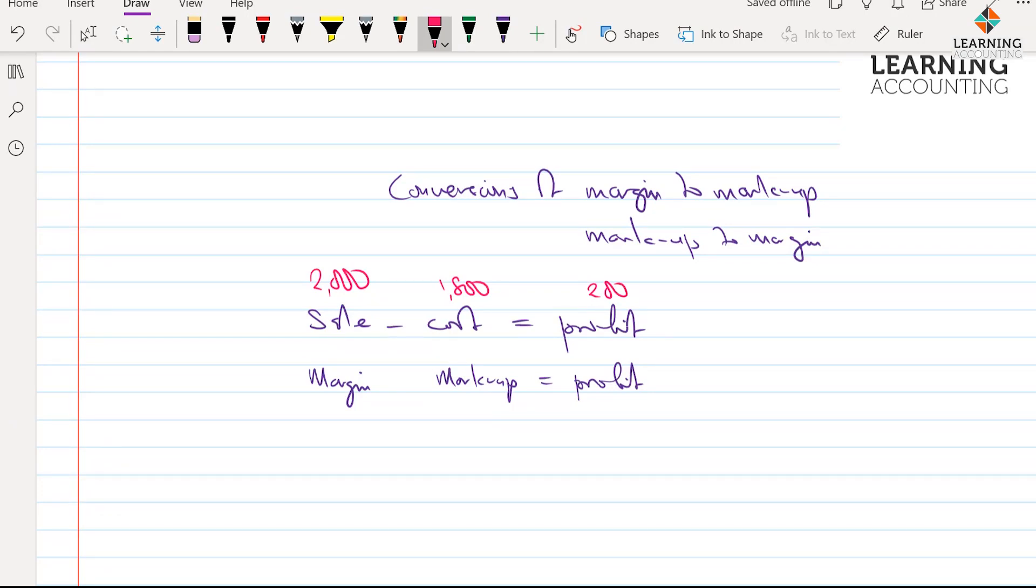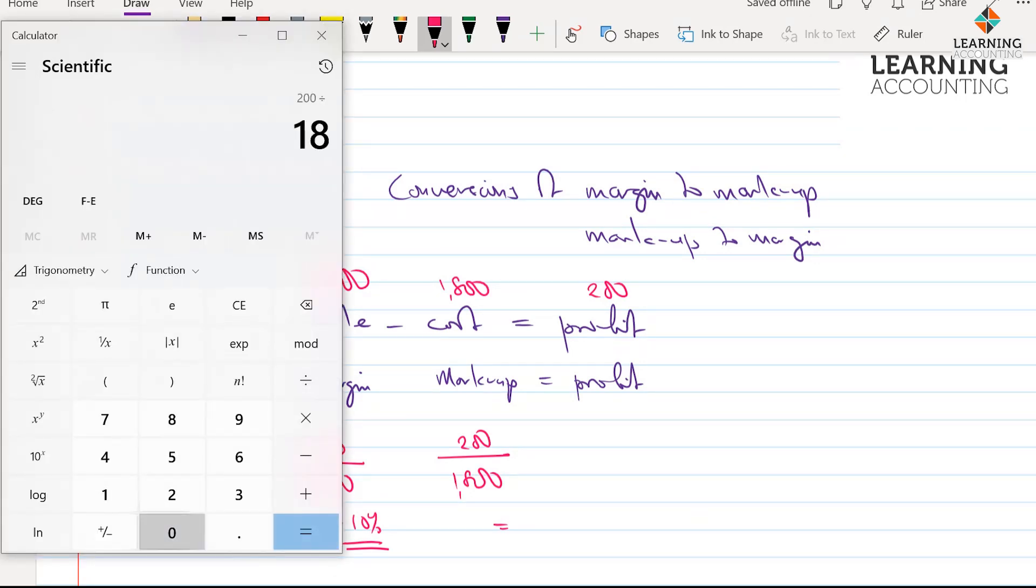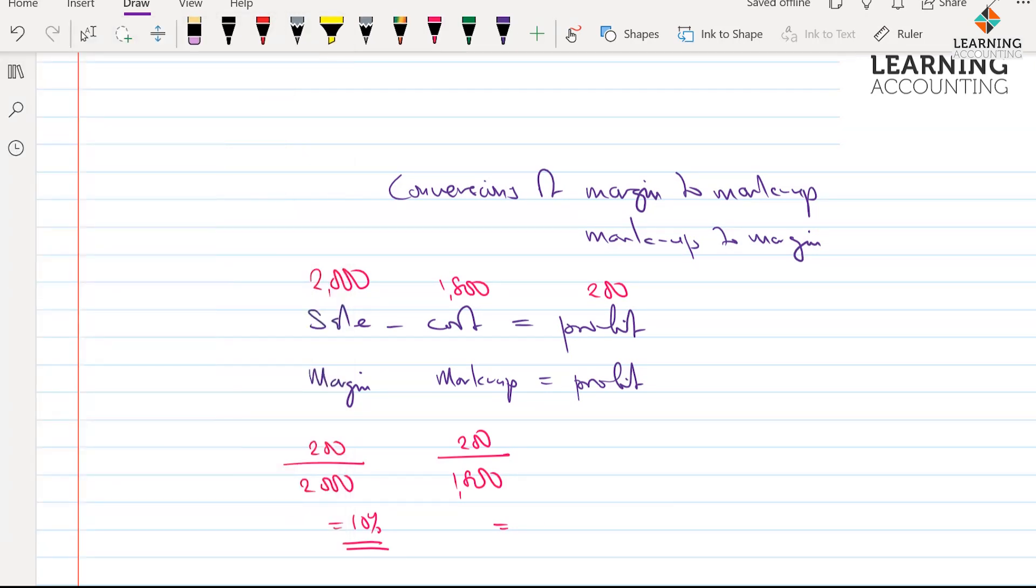Now, if we want to calculate margin, then it should be 200 over 2,000. And that should give us 10%. Well, if we want to calculate markup, it should be 200 over 1,800. And that will give us what? I think I would use my calculator in this case. So let me, on my calculator. So 200 divided by 1,800. Of course, we have 0.111. So let me just say 0.11, which is 11%, approximately.